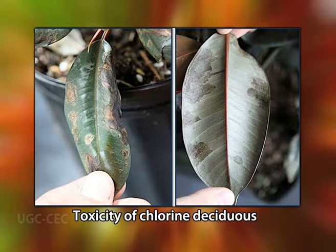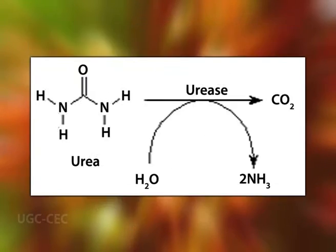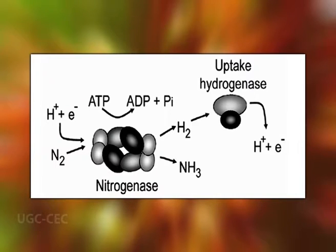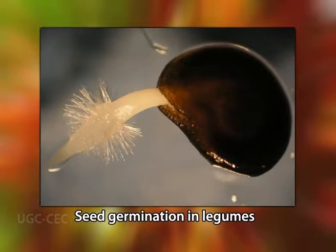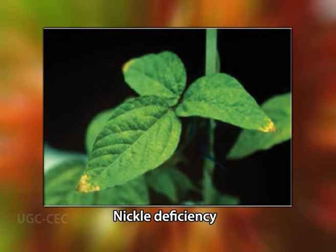Nickel is an abundant metallic element and is readily absorbed by roots. It is known to be a component of two enzymes: urease and hydrogenase. Urease catalyzes the hydrolysis of urea into NH₃ and carbon dioxide, while hydrogenase helps in reprocessing some of the hydrogen gas generated during nitrogen fixation. To some extent, nickel is also important for seed germination of legumes and cereal grains.